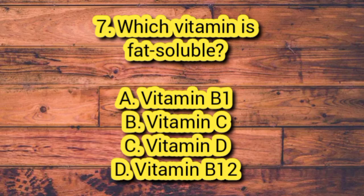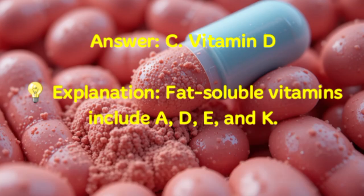Number 7. Which vitamin is fat-soluble? A. Vitamin B1. B. Vitamin C. C. Vitamin D. D. Vitamin B12. Answer: C. Vitamin D. Explanation: Fat-soluble vitamins include A, D, E, and K.